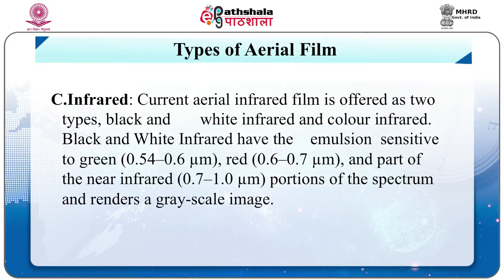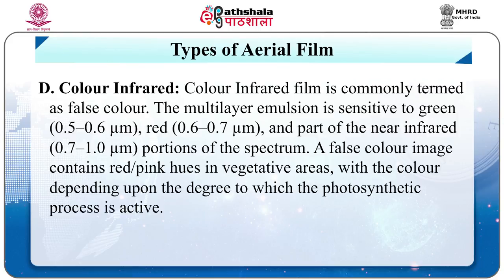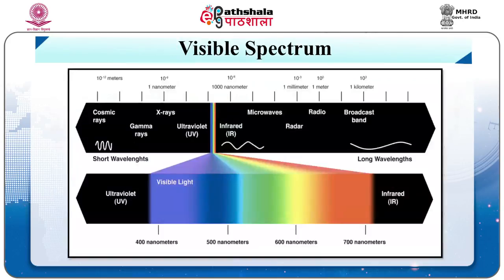Infrared — current aerial infrared film is offered as two types: black and white infrared and colored infrared. Black and white infrared has emulsion sensitive to green, red, and part of the near-infrared portions of the spectrum and renders a grayscale image. Colored infrared film is commonly termed false color. The multi-layer emulsion is sensitive to green, red, and part of the near-infrared portions of the spectrum. A false color image contains red or pink hues in vegetative areas, with the color depending on the degree to which photosynthetic processes are active.